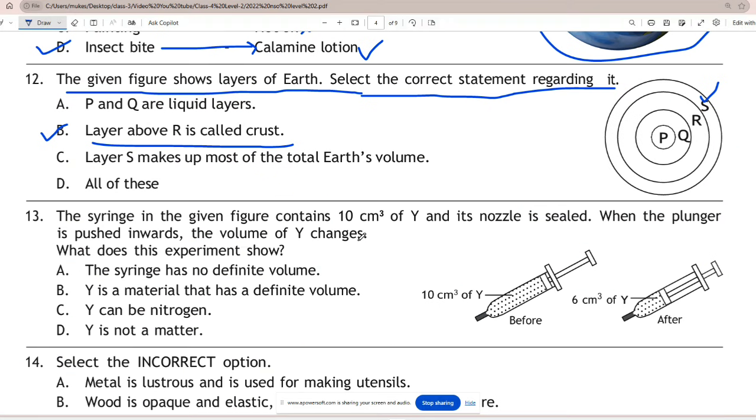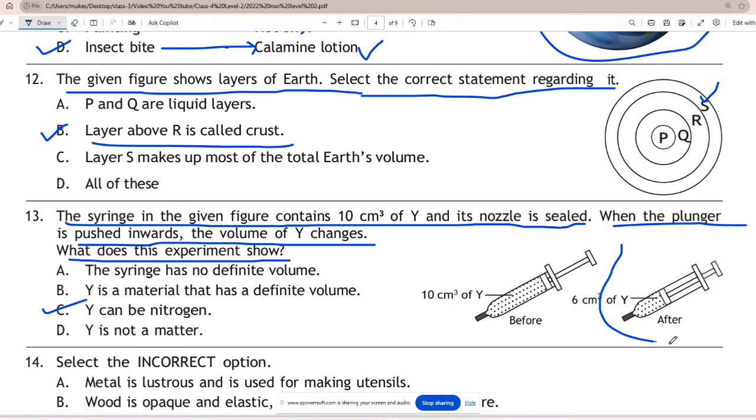Question 13: The syringe in the given figure contains 10 cubic centimeters of Y and its nozzle is sealed. When the plunger is pushed inwards, the volume of Y changes. What does this experiment show? The correct match is C - Y can be nitrogen. Nitrogen is compressible, which means that its volume changes when a force is applied to it.